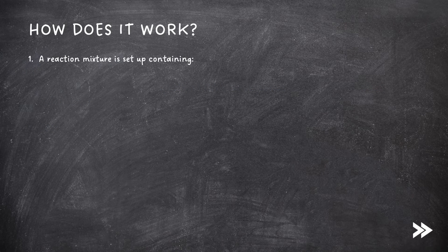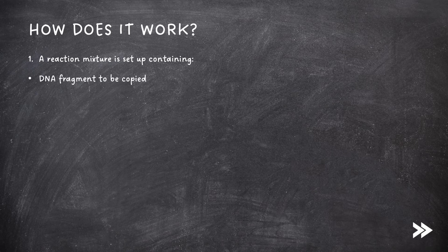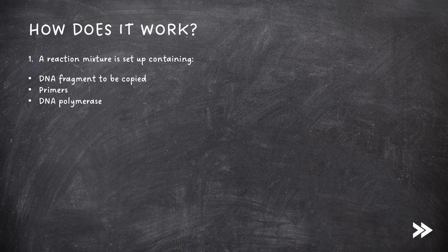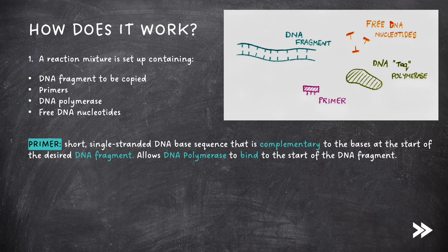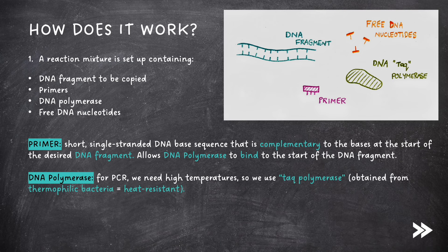So, how does PCR work? First, a reaction mixture is set up containing the DNA fragment to be copied, primers, DNA polymerase, and free DNA nucleotides. Note that a primer is a short, single-stranded DNA base sequence that is complementary to the bases at the start of the desired DNA fragments. It allows DNA polymerase to bind to the start of the DNA fragments. Note also that the DNA polymerase is a special heat-resistant type. As for PCR, we need high temperatures, so we use TAC polymerase, a type of DNA polymerase that is obtained from thermophilic bacteria, and so is heat-resistant.